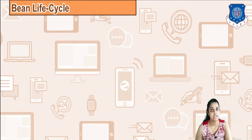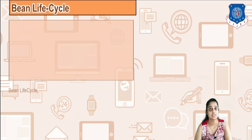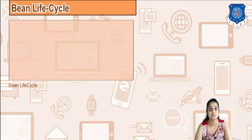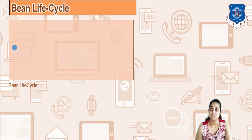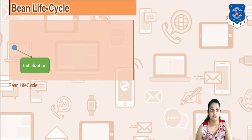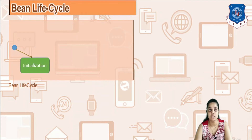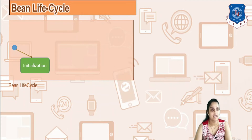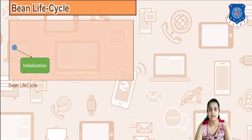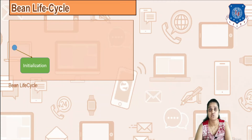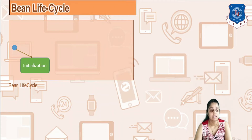We shall now see the Bean Life Cycle. In the bean life cycle, first you are in a nothing state. Then your bean enters the initialization state where it is initialized. For example, I have a POJO file — say a class Student — with private variables name and id, and getter setters for both. The bean is initialized and an object of the bean is created.